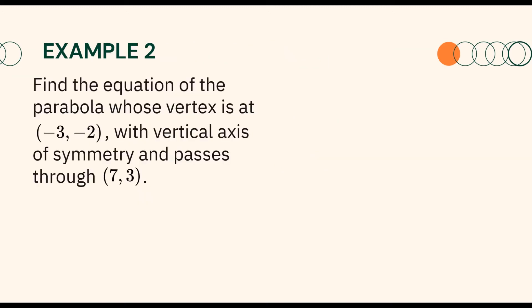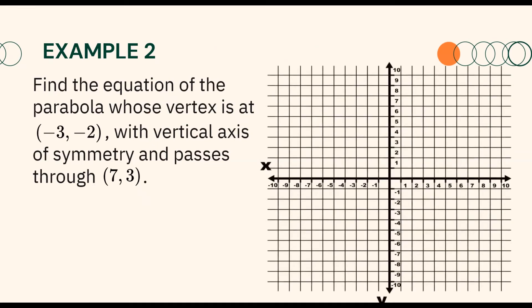Let us have another example. Find the equation of the parabola whose vertex is at (negative 3, negative 2), with a vertical axis of symmetry and passing through (7, 3). We can illustrate the given first so we can analyze the parabola. Since the axis of symmetry is vertical, the parabola either opens upward or downward. But since the parabola passes through (7, 3), it means that the parabola opens upward.